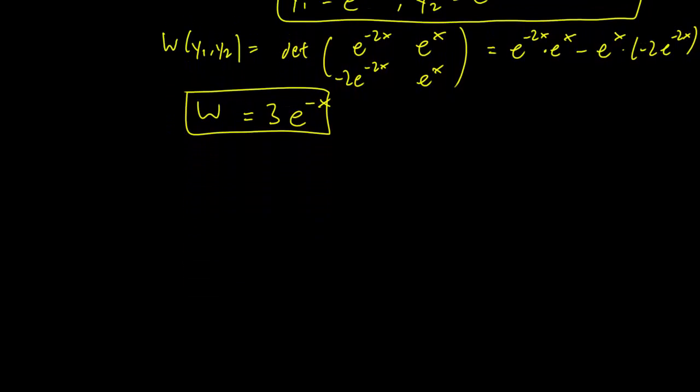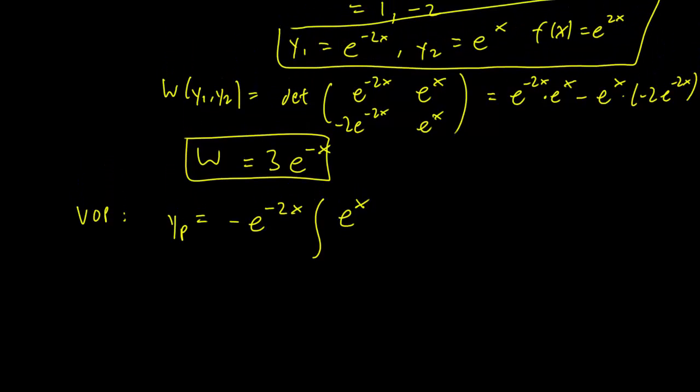And according to our VOP formula, the particular solution for the non-homogeneous equation is going to be -e^(-2x) (y1) integral of y2, which is going to be e^x times f(x) over Wronskian, which is 3e^(-x) dx, plus this time y2 integral of y1 times f(x) over Wronskian, which is 3e^(-x) dx.